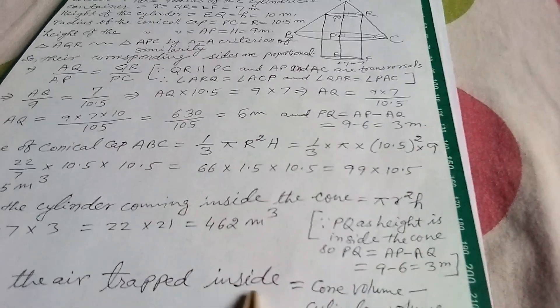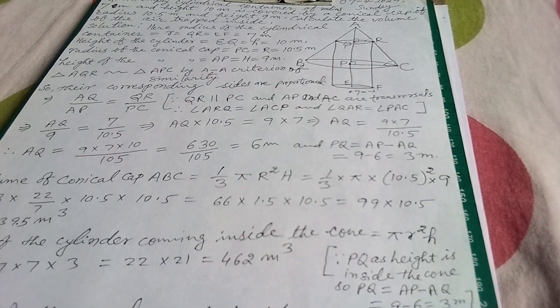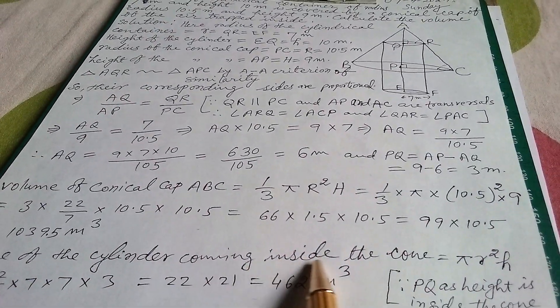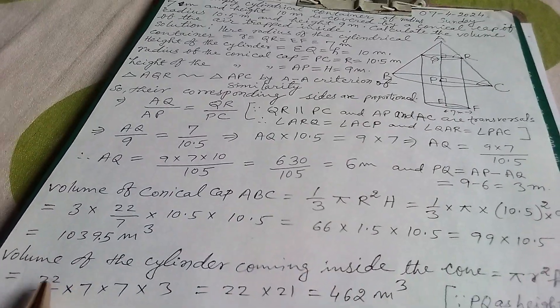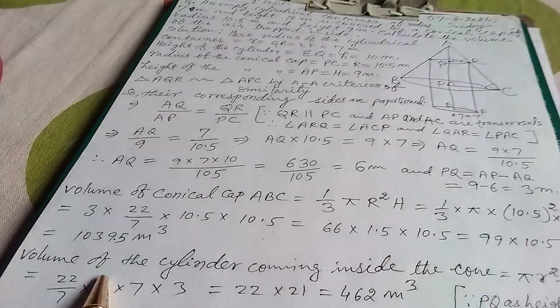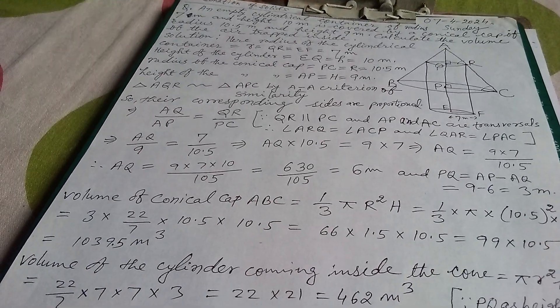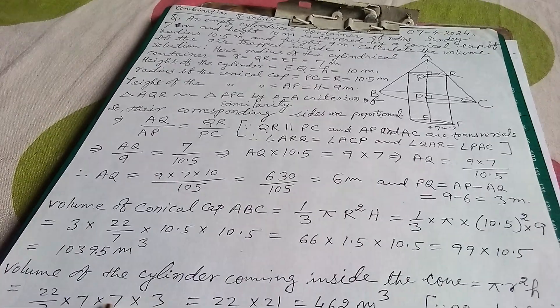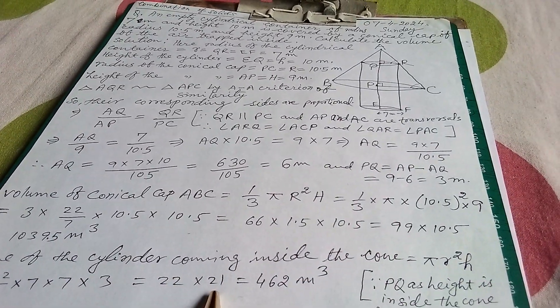Therefore volume of the air trapped inside: first we calculate the volume of the cylinder coming inside the cone, that is π r² h. So π is 22/7 times 7 times 7 times 3. 7 and 7 cancelled. Then 22 times 7 times 3, that is 22 times 21, equals 462 meter cubed.